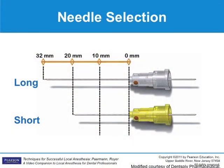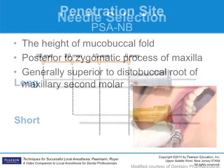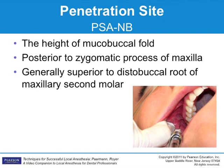A 27 gauge short needle is recommended for this injection, though some clinicians prefer to use a long needle. The penetration site is distal to the zygomatic process at the height of the mucobuccal fold above the distal buccal root of the maxillary second molar.